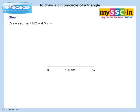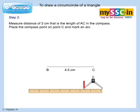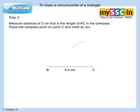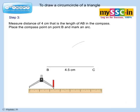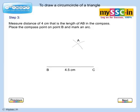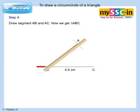Draw segment BC equal to 4.5 centimetre. Measure a distance of 3 centimetre, that is the length of AC, in the compass; place the compass point on point C and mark an arc. Measure a distance of 4 centimetre, that is the length of AB, in the compass; place the compass point on point B and mark an arc. Draw segments AB and AC.